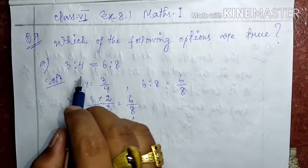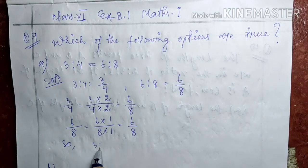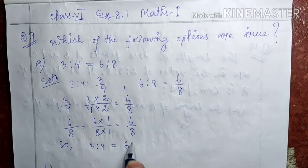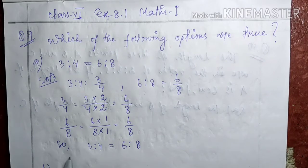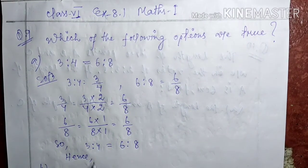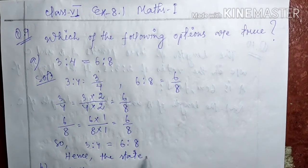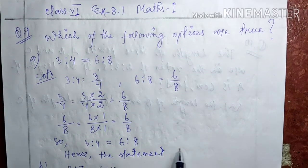So they are 6 by 8 and 6 by 8. These two are the same, then these two ratios are equal. Hence, the statement is true.